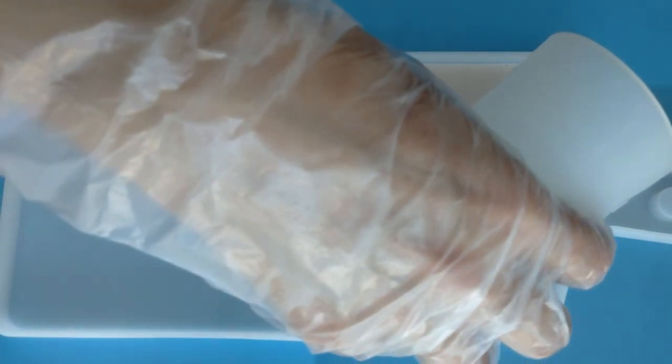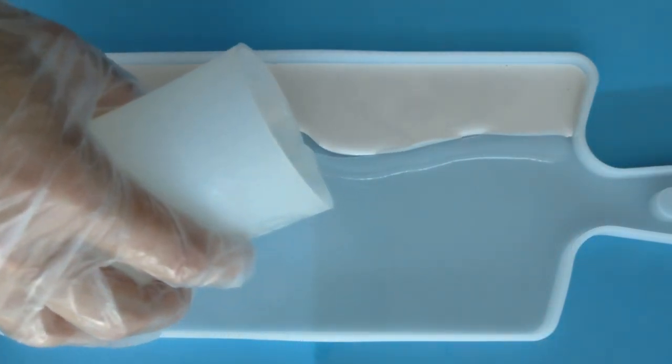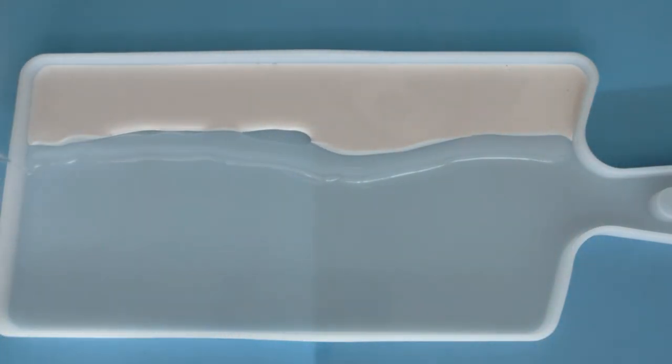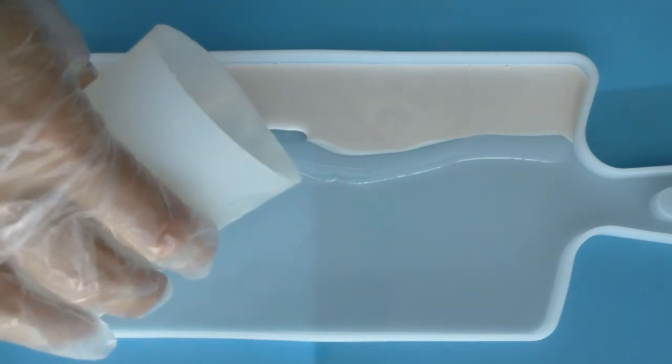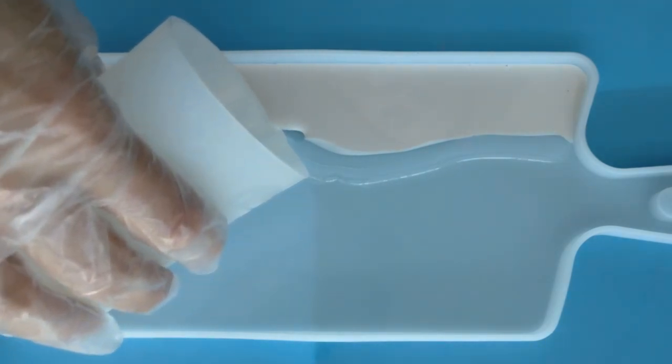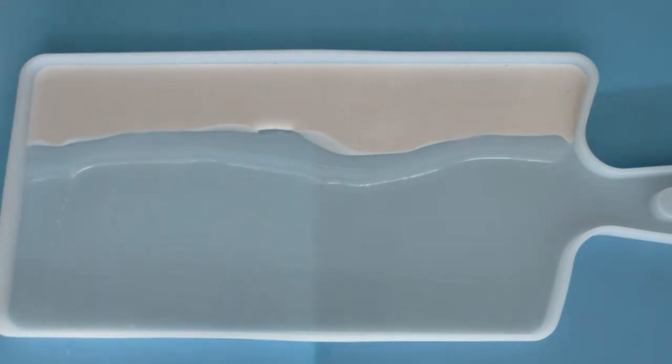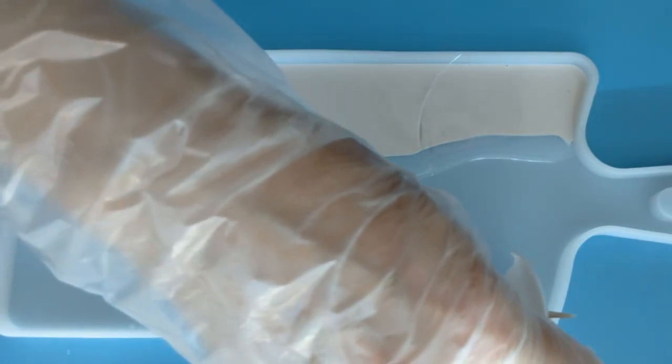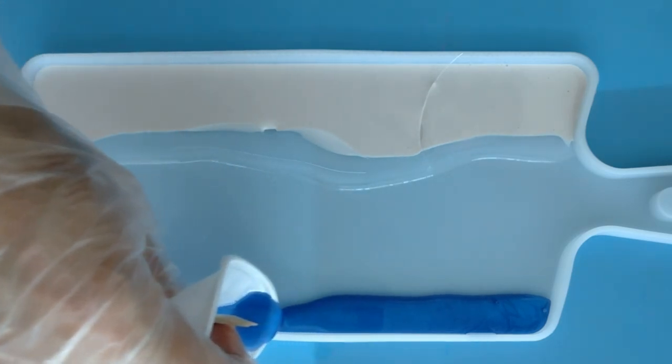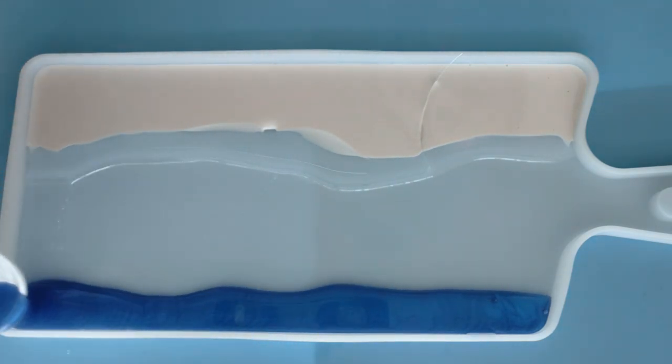After I poured my beige, I poured some clear resin, and then just to divide my beach part from my ocean part, then I added some dark blue mica.